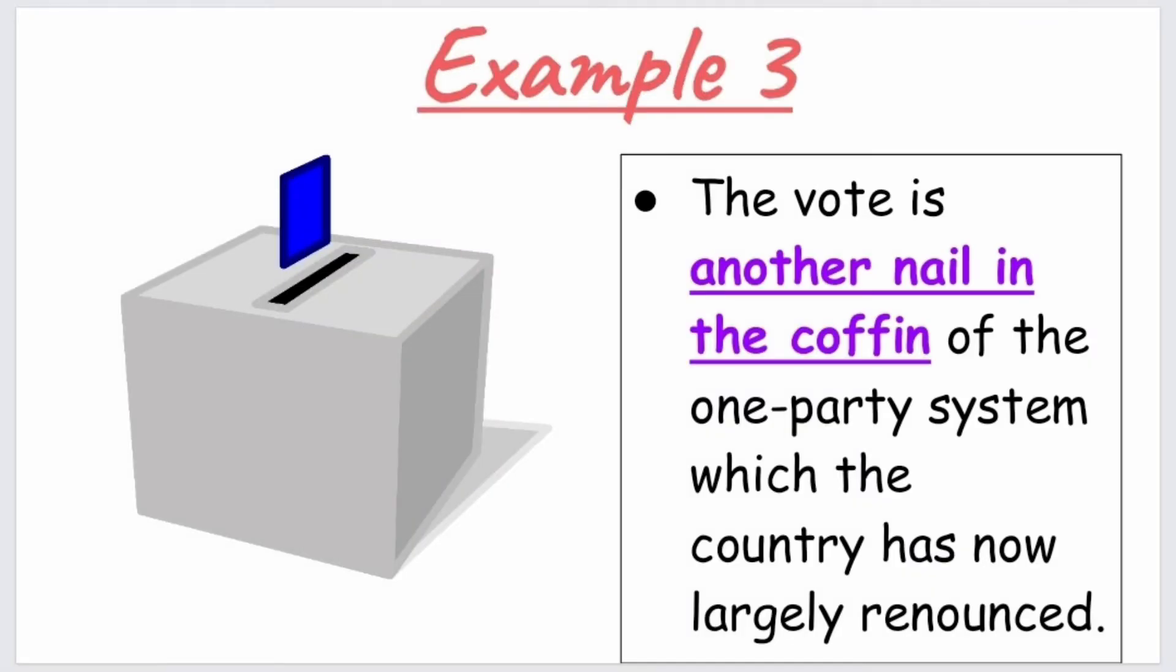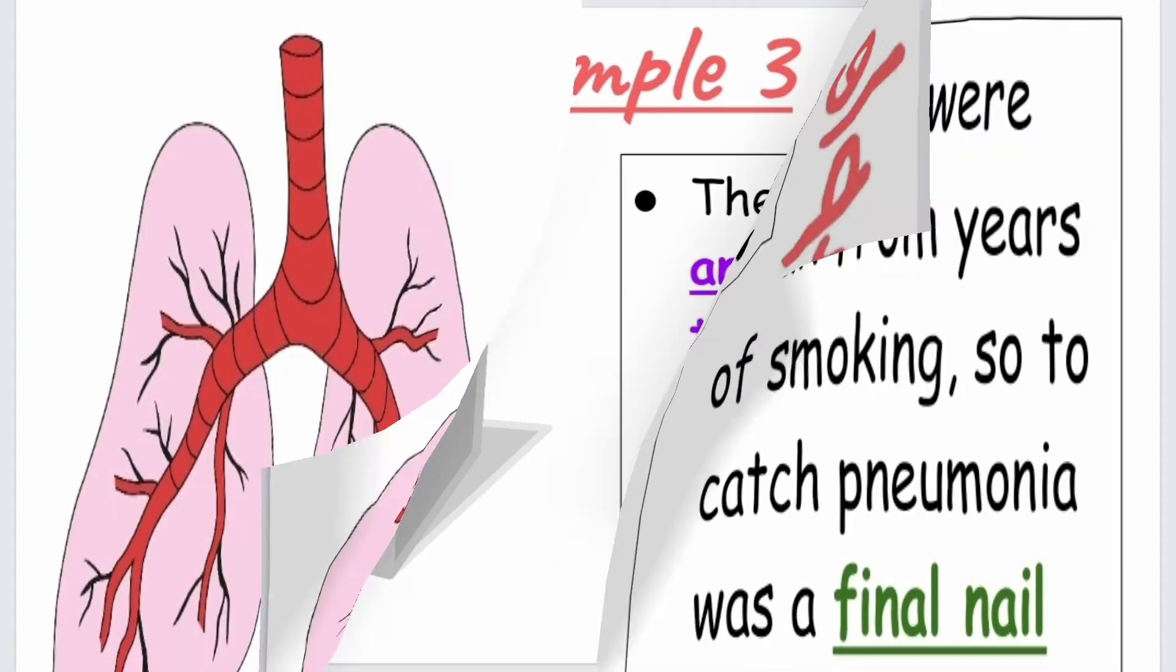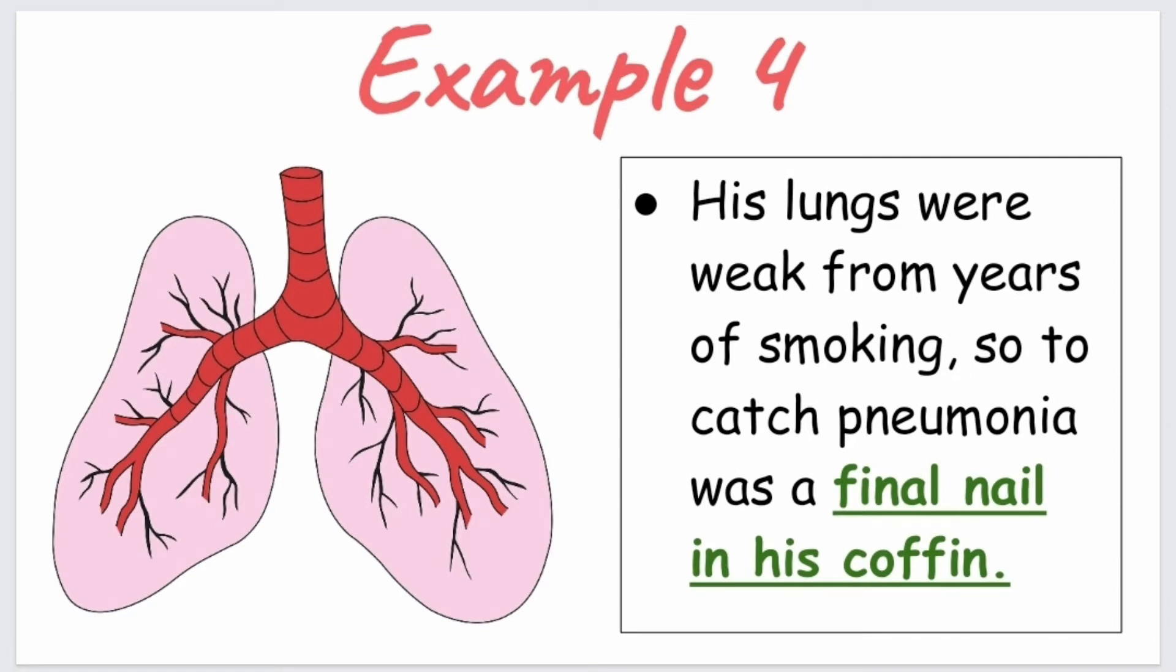Our third example is the vote is another nail in the coffin of the one-party system which the country has now largely renounced. And our fourth example is his lungs were weak from years of smoking, so to catch pneumonia was the final nail in his coffin.